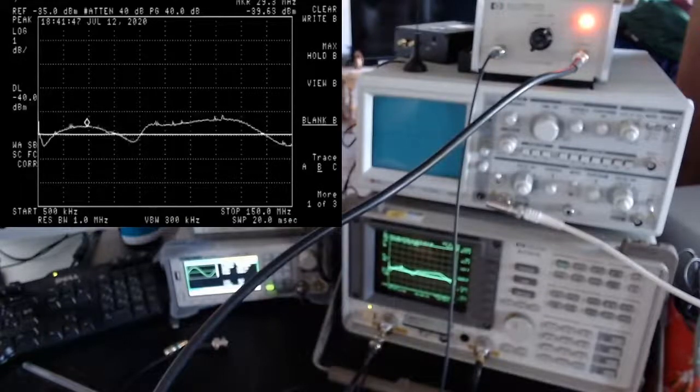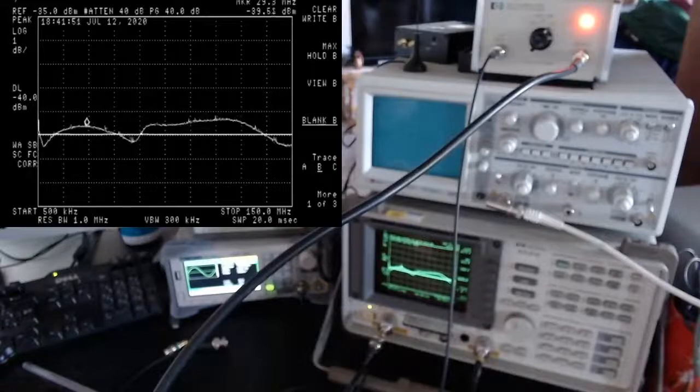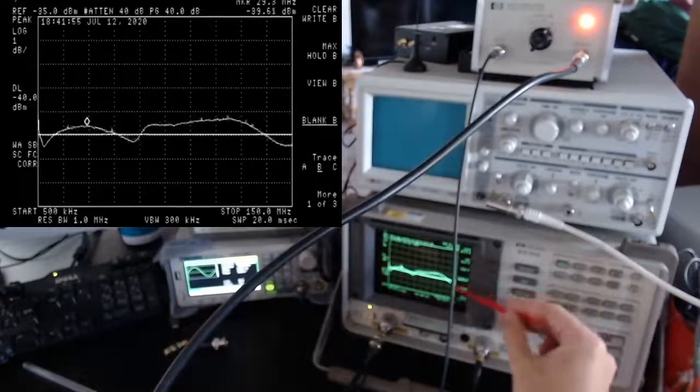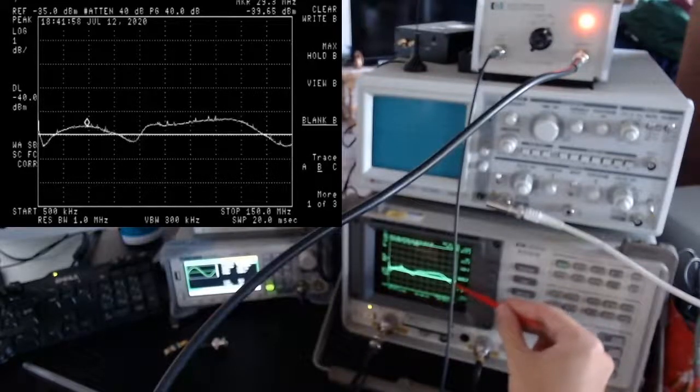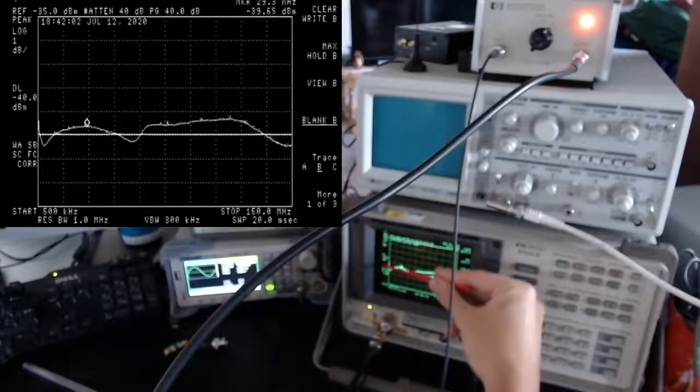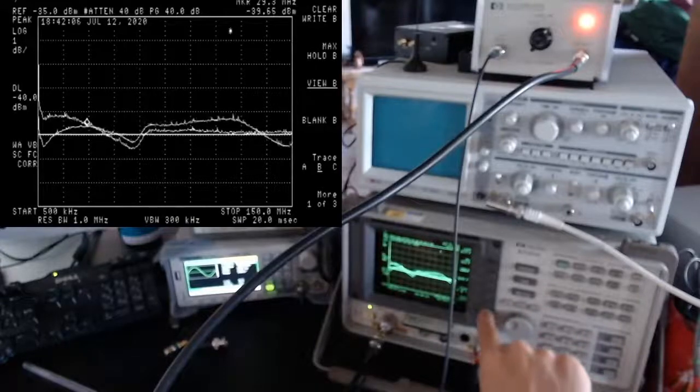However, I realized after I made the last video that this measurement was not correct. And this is because the tracking generator is not an ideal generator. It does not produce this perfectly flat line at minus 40 dBm. Instead, let me show it to you.